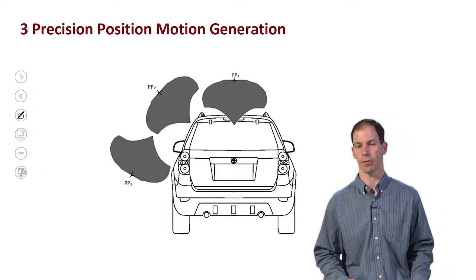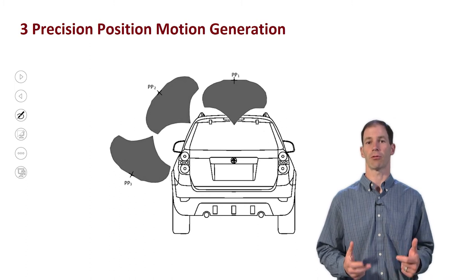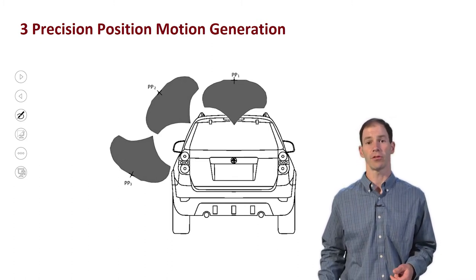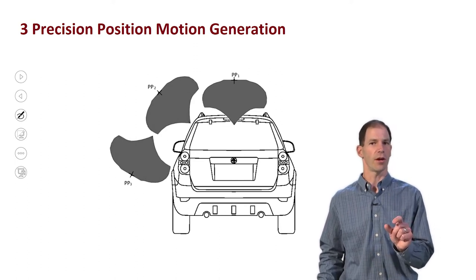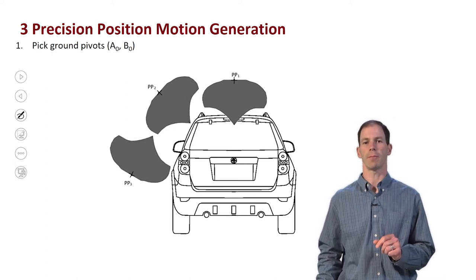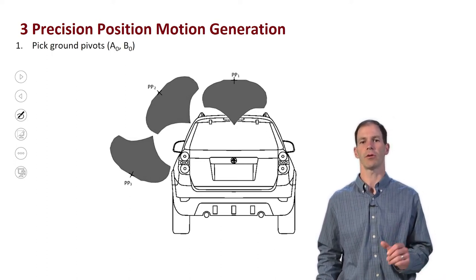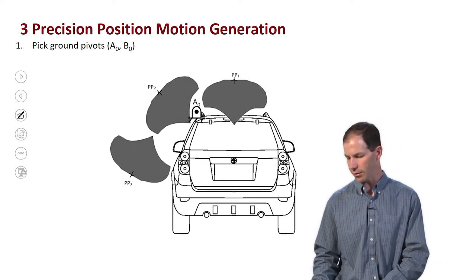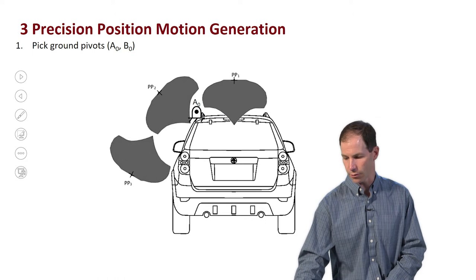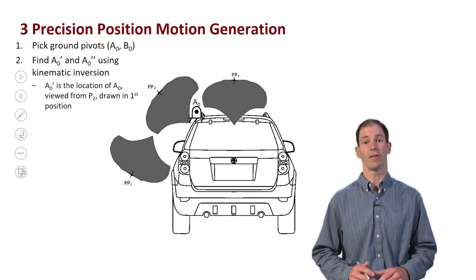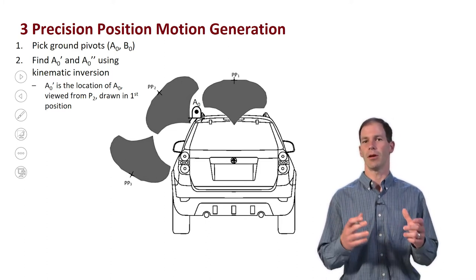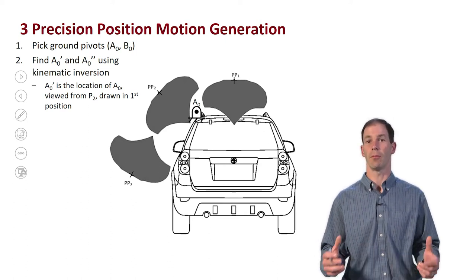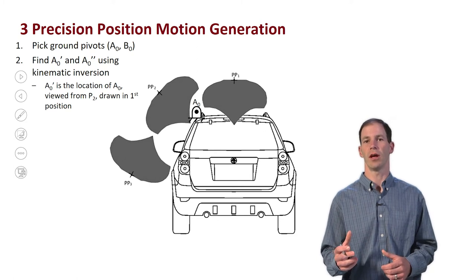This is ground pivot specification for three precision positions. I'm looking at this canoe or kayak loading mechanism. I've got the three positions already sketched up here, and now I want to synthesize this four bar. Instead of picking moving pivots, I'm going to pick ground pivots. I'll place A-knot on the upper left side of the roof rack, which is a convenient location I could connect to a roof rack, rather than trying to connect to the bumper or some other location the moving pivot solutions were giving me.